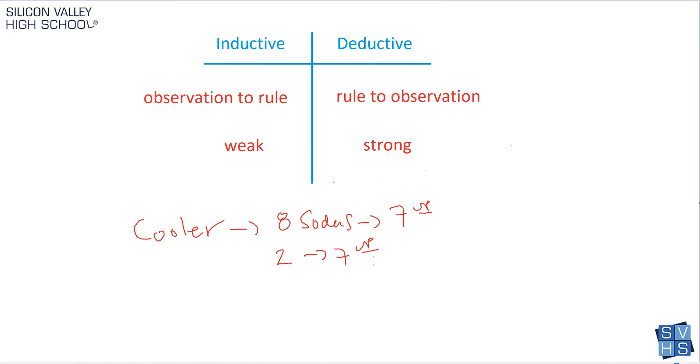But again, this is sort of considered, this is weak reasoning if you ask me, because there's no rule that says in America, or anywhere, when there's a cooler, and you have 10 sodas, all of them are Seven Up. There's no rule. You just made the observation, right? And then you kind of jumped to the conclusion that the last two were going to be Seven Up. So this is an example of inductive reasoning. Okay, let's do another one.